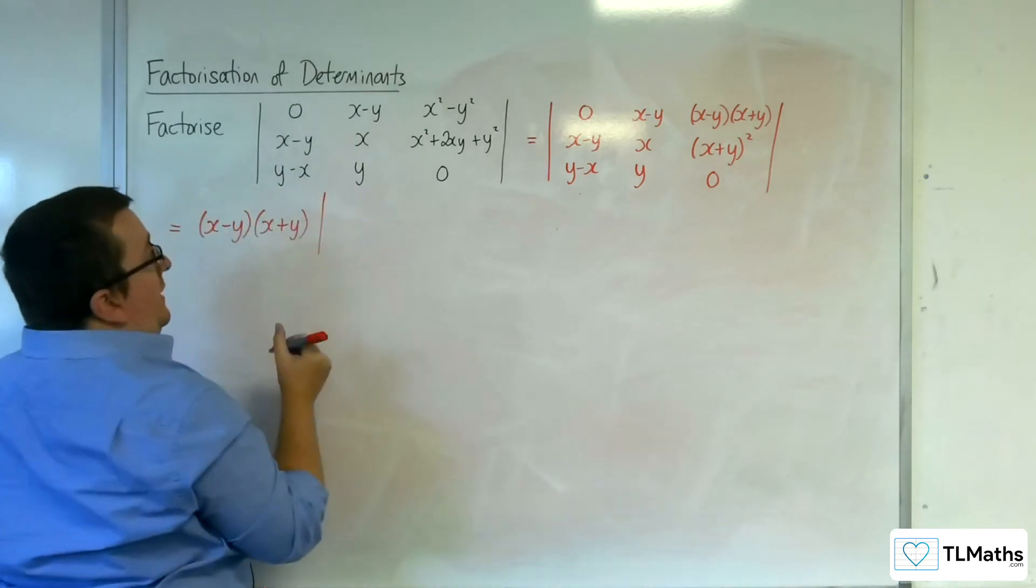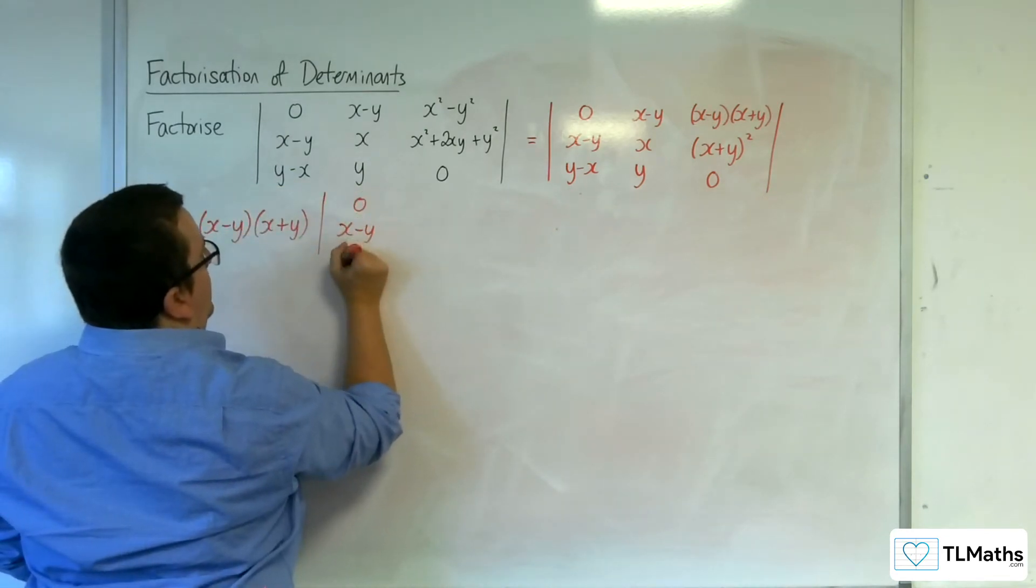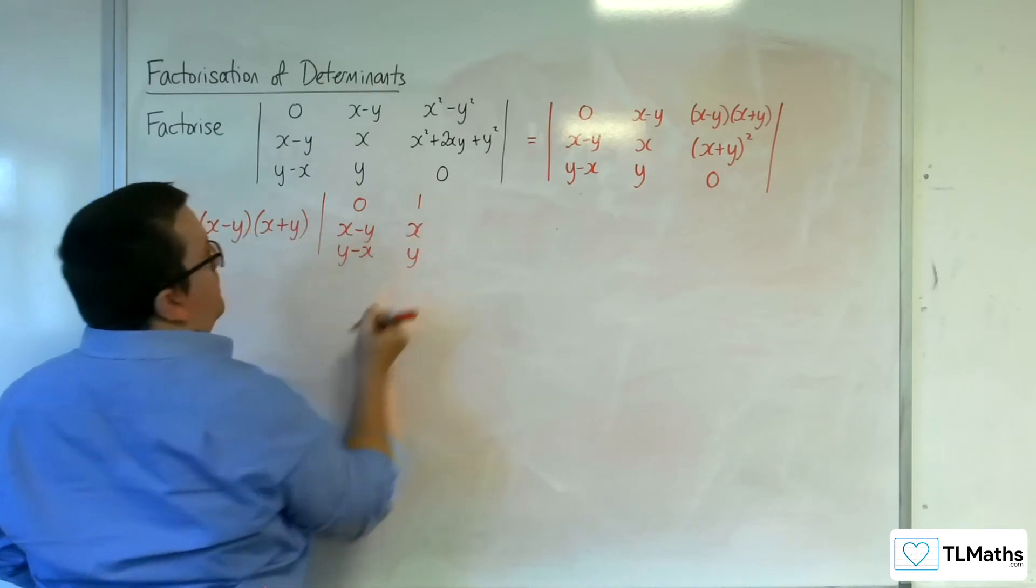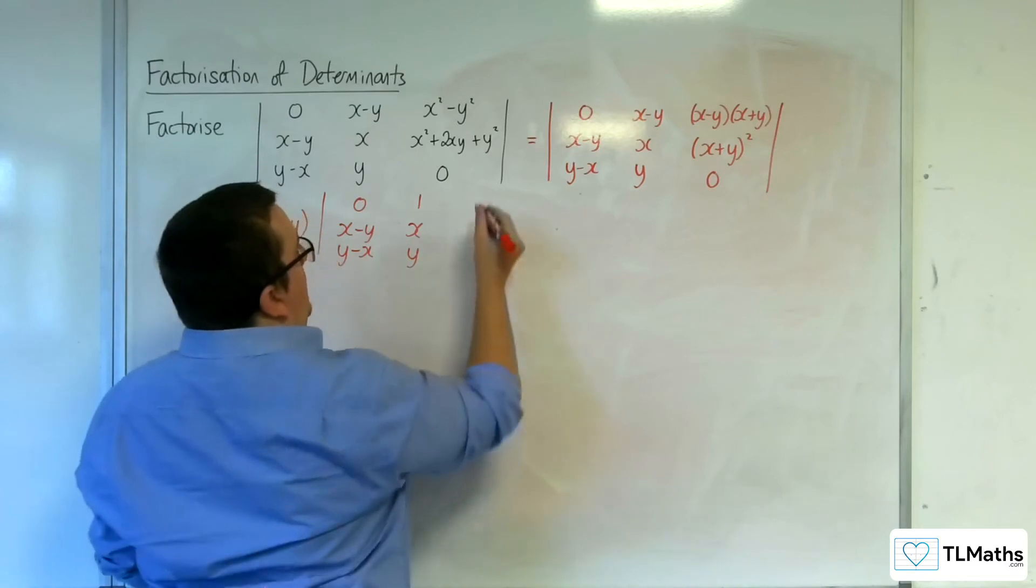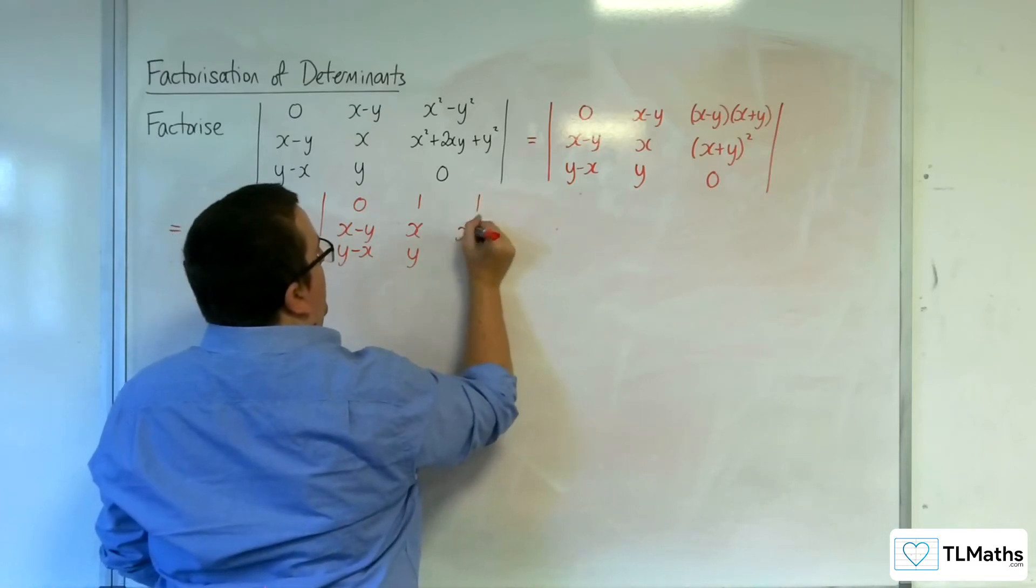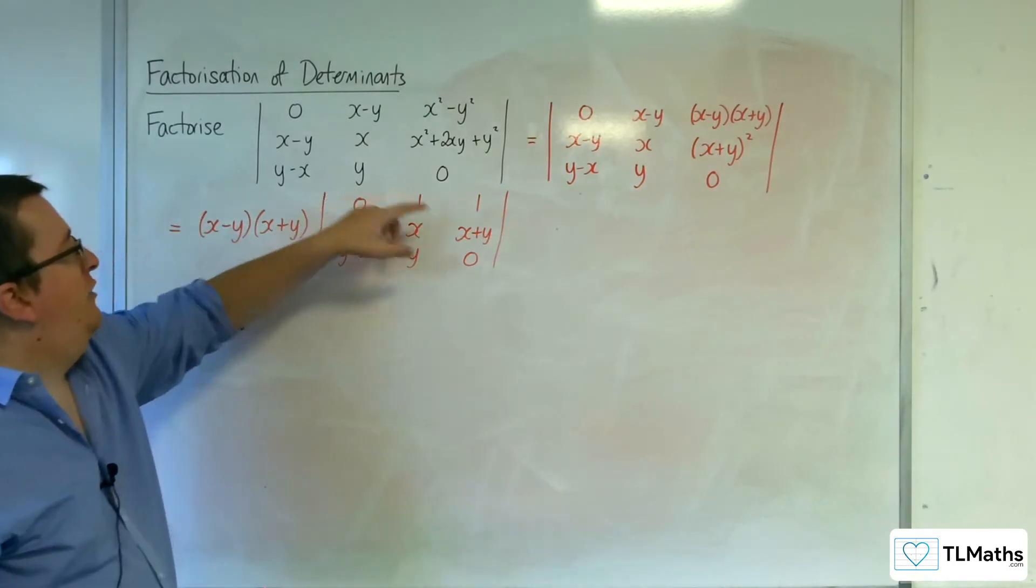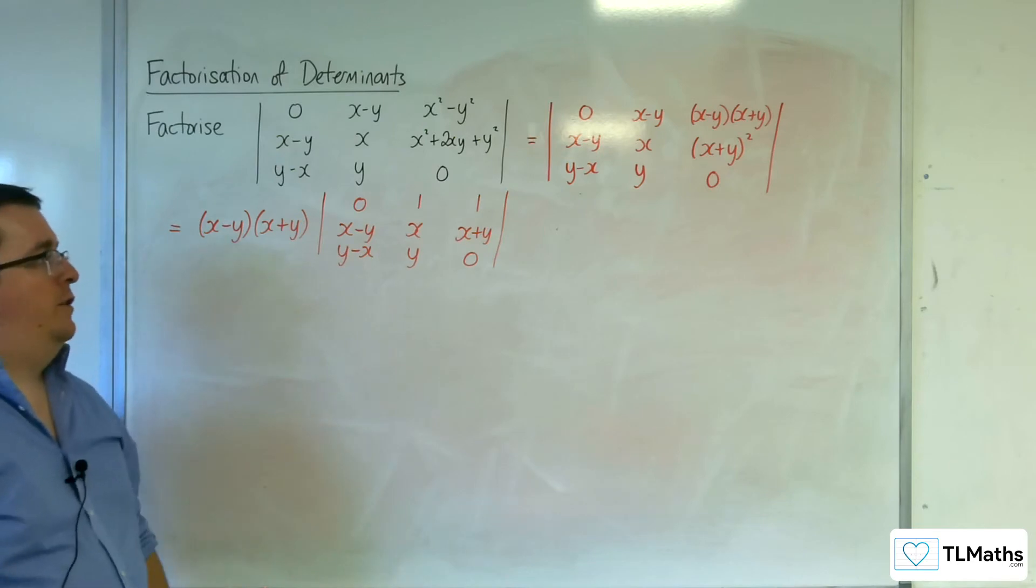So that's going to leave us with: 0, x take away y, y take away x; we'll have 1, x, y; and we will have just 1, then the x plus y, and 0. So, x take away y is gone from the top row, and x plus y is gone from the third column.